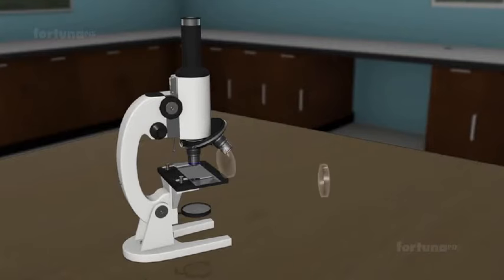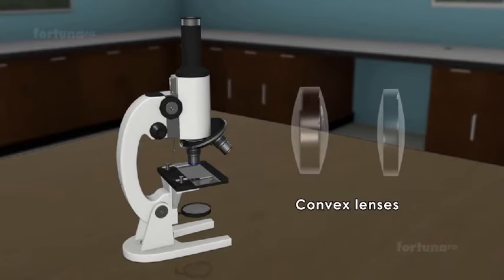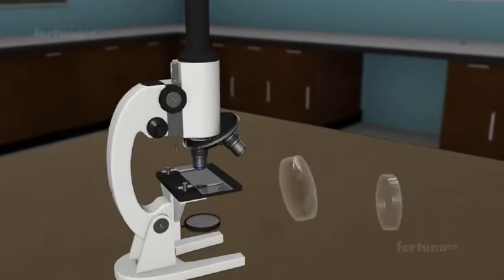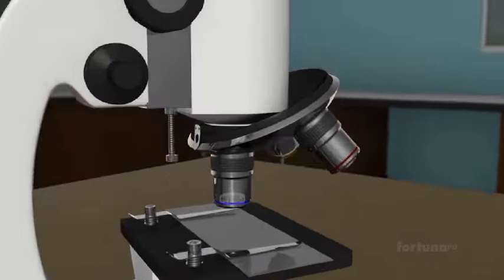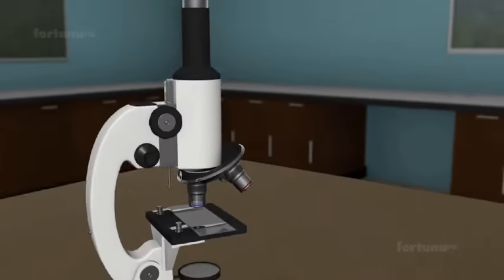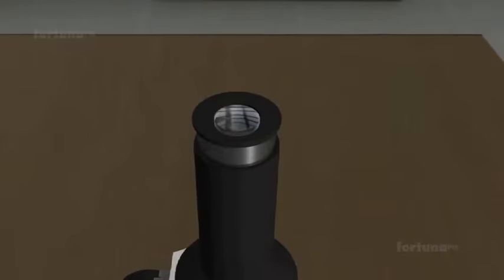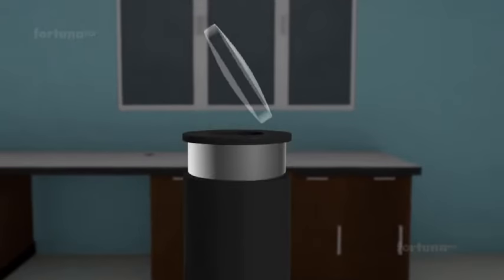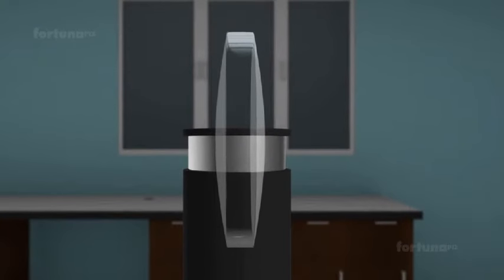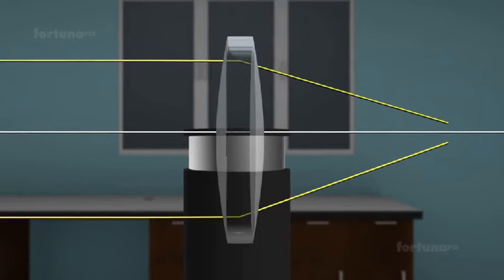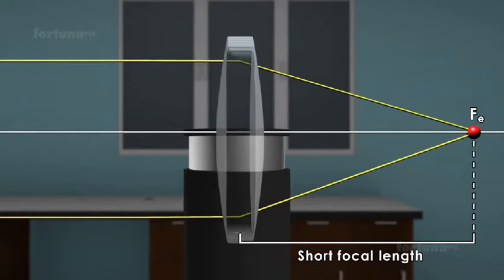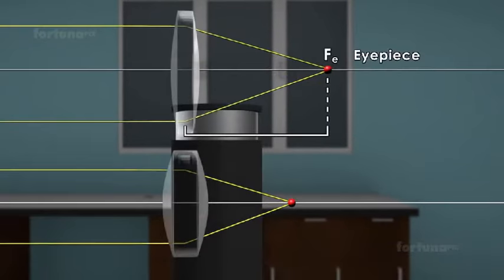The lenses are convex with different focal lengths. The lens closer to the object is the objective and has a short focal length F0, usually below 1 cm. The lens nearer the eye is the eyepiece. Although the eyepiece also has a short focal length Fe, it is still greater than the focal length of the objective.